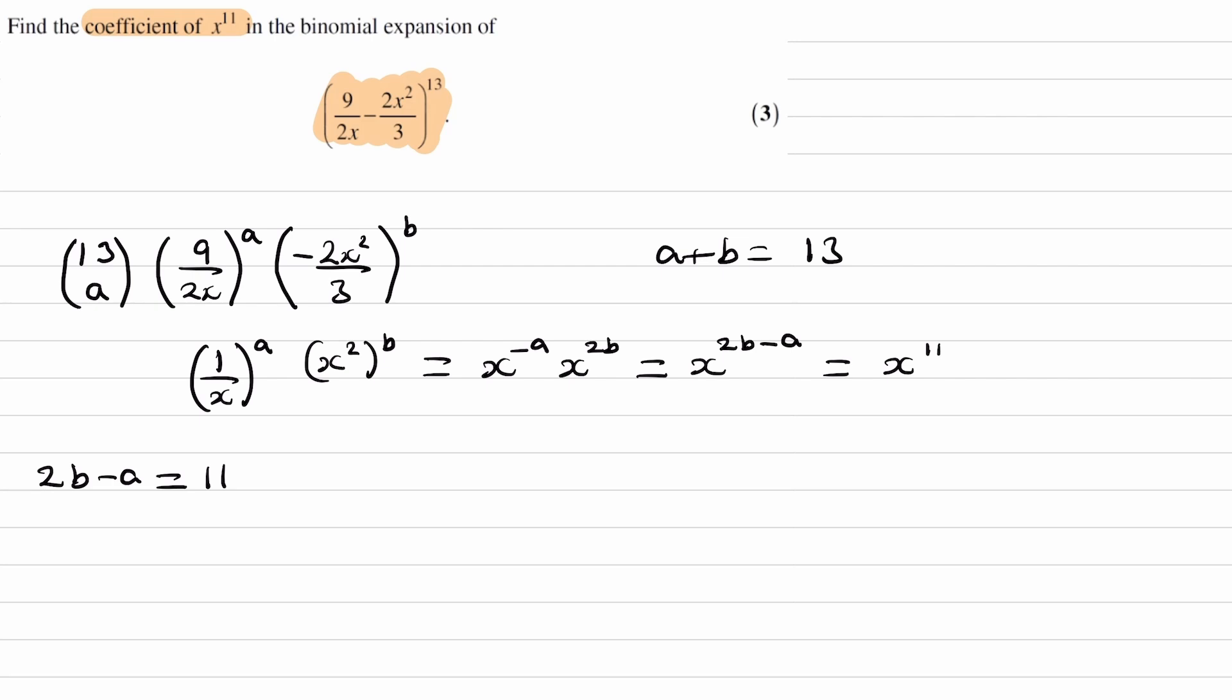We already have from earlier that a plus b must equal to 13. So we can solve those two things simultaneously. We can add them up. That gets rid of the a and the minus a. We end up with 3b is equal to 24. So b is equal to 8.